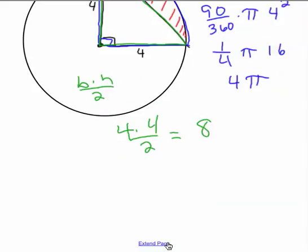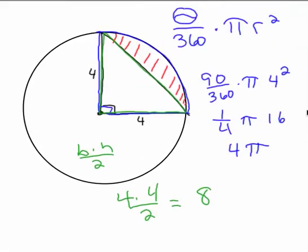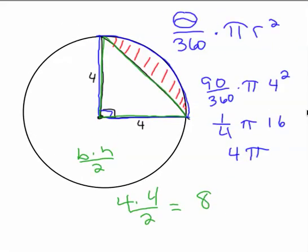And so now to find the leftover part, we know the area of the triangle and we know the area of the sector, so we know the green part and the blue part. So to find the red part, you just subtract them. So 4 pi minus 8.